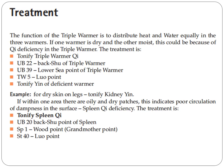For example, for dry skin on the legs, tonify kidney yin. If within one area there are oily and dry patches, this indicates poor circulation of dampness on the surface or spleen qi deficiency. The treatment is to tonify spleen: UB-20, the back-shu point of spleen; spleen 1, the wood point or grandmother point; and stomach 40, the luo-connecting point.